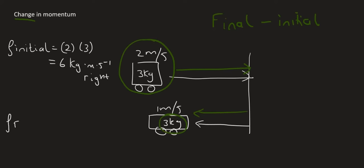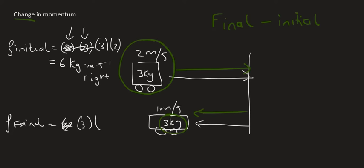So the initial momentum is 6 kilogram meters per second to the right. Then we look at the final momentum. That's going to be a mass of 3 times a velocity of 1, giving a momentum of 3 kilogram meters per second to the left.